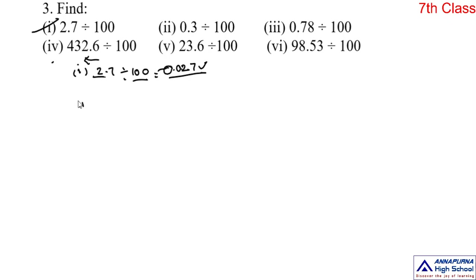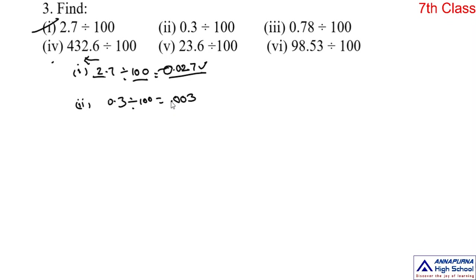Second one is 0.3 divided by 100. This is the same as the first one. Ignore the decimal point and write the number as 0, 3. In the decimal number, to the left of the decimal point, how many digits are there? There is no digit. But we should shift this point towards left by two digits: 1, 2 — no digit, put zero, then put point. So the answer is 0.003.